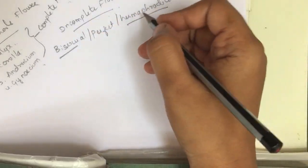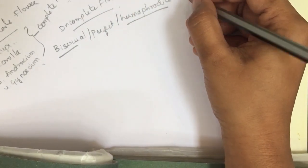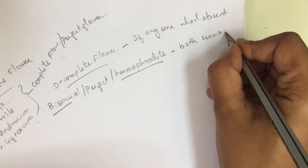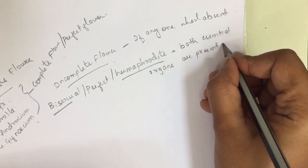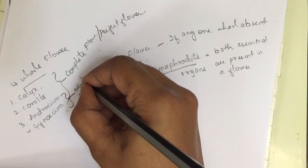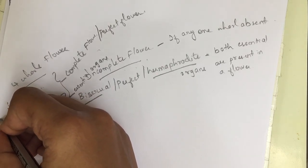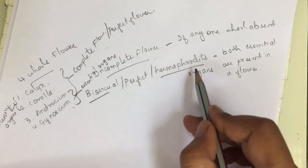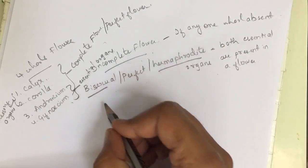A bisexual, perfect, or hermaphrodite flower is one that consists of both essential organs — androecium and gynoecium. Calyx and corolla are accessory organs, while androecium and gynoecium are the essential organs. When both essential organs are present in a flower, it is called bisexual, perfect, or hermaphrodite.